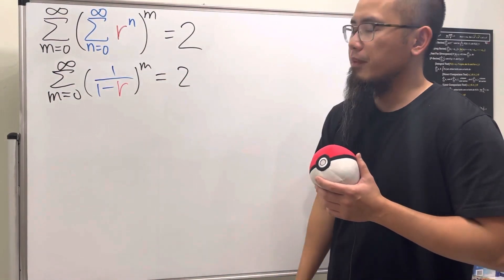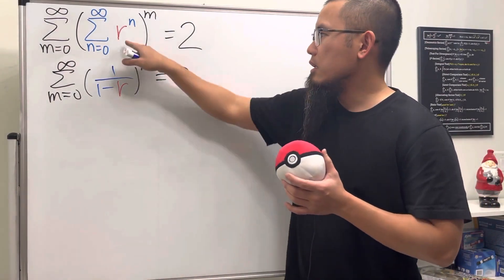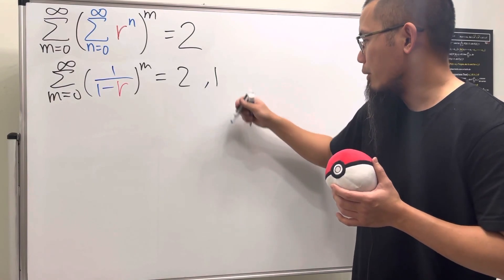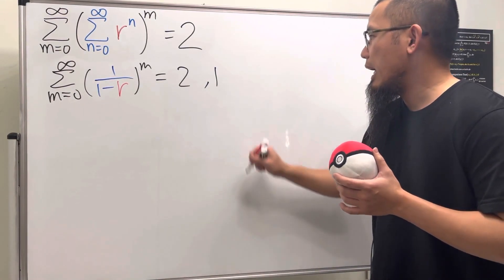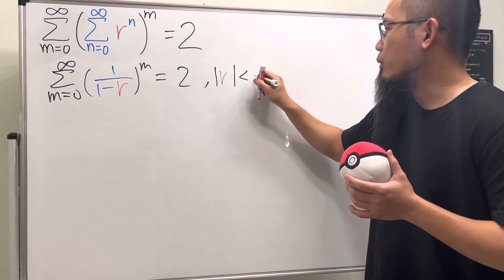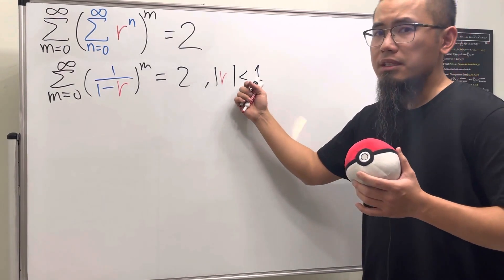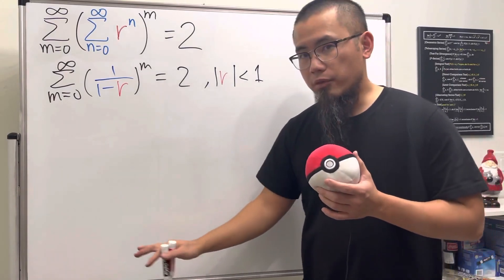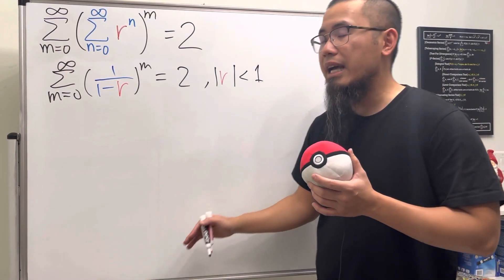But what's the condition that this right here converges? Well, we have to remember that the absolute value of r has to be less than one. This is the detail that we have to know, and later on for the r value that we get, we have to make sure that it does satisfy this.